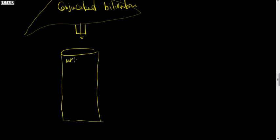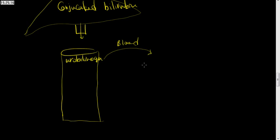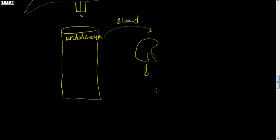In the gut, it will be converted into urobilinogen. A small amount of the urobilinogen will escape into the general circulation. As urobilinogen is a form of conjugated bilirubin, it is water-soluble and can be filtered through the kidney, so it will appear in the urine — urobilinogen in the urine. This is the normal state.